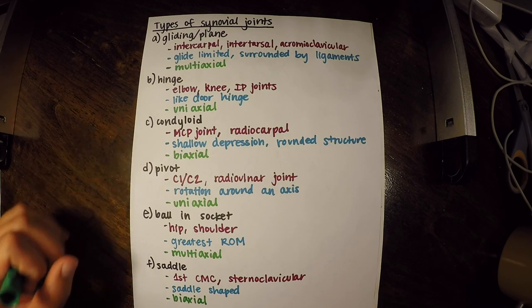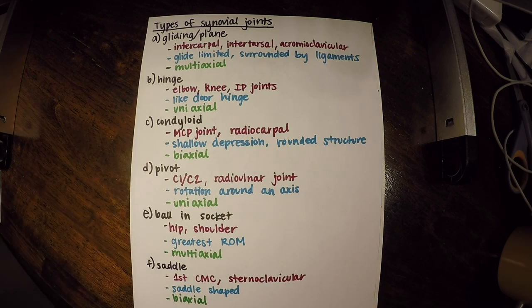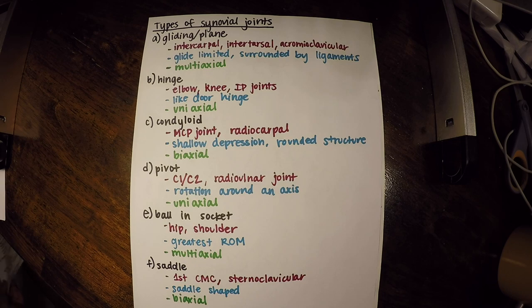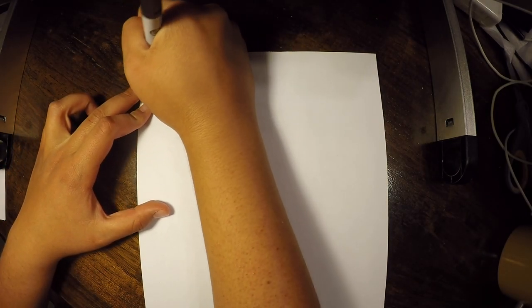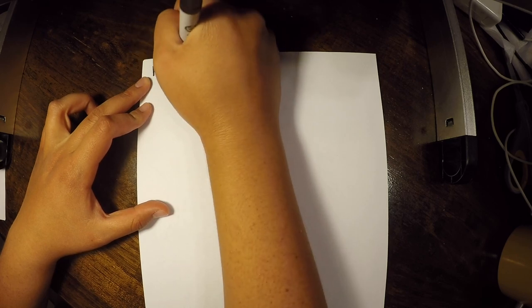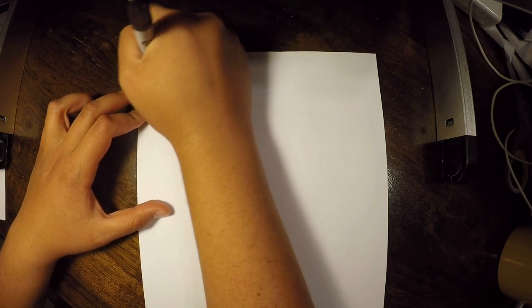Now let's look at a specific example of a synovial joint — the knee, which is an important hinge-type synovial joint. We're going to draw an anterior view of a right knee.